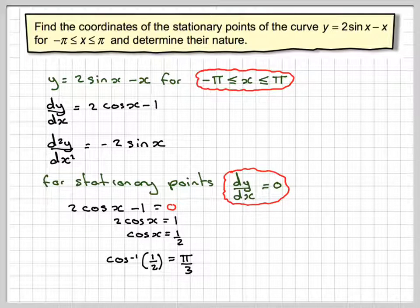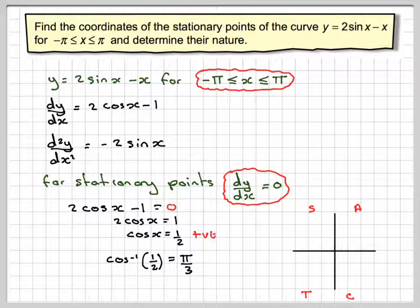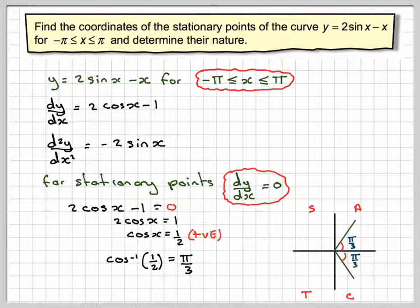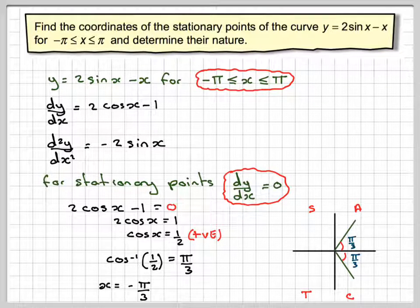You need to learn the table for those. Using the CAST diagram idea — where cosine is positive, that's in the first and fourth quadrants — we make the angle with the axis pi over 3 in each quadrant. We're solving for minus pi to pi, so going clockwise that's minus pi; coming back, that gives x equals minus pi over 3, and the other solution from plus pi over 3 gives x equals pi over 3.